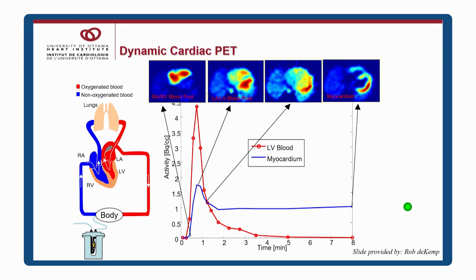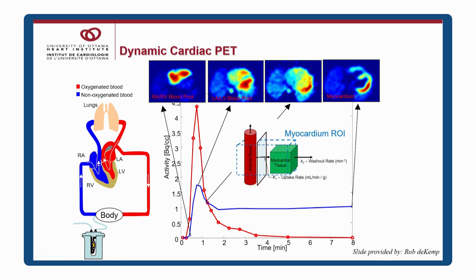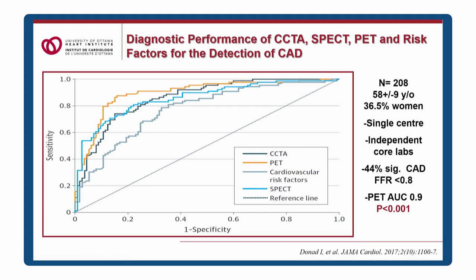With dynamic PET, all the action is in the first several minutes. We take this data and apply a mathematical model that examines blood and tissue activity to derive the true myocardial uptake curve. From this we can determine the rate constant k1 for uptake from blood into tissue, which relates to flow and extraction, and from this we can calculate myocardial blood flow.